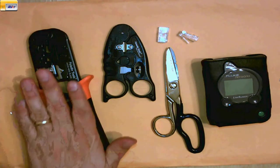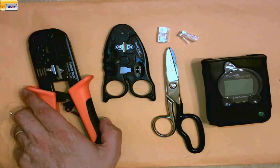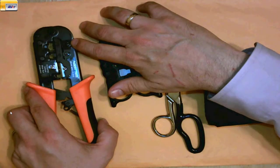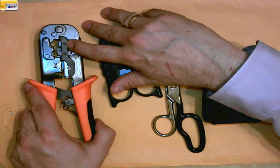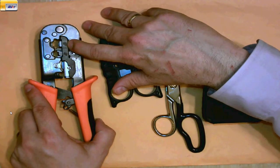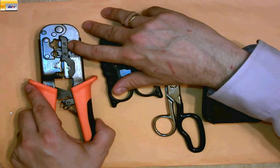Let's introduce our tools. First off we have our crimper. This is a multi-function crimper. It has an eight position crimp. That's the one we'll be using today and throughout this class. Eight positions because ethernet has eight wires.